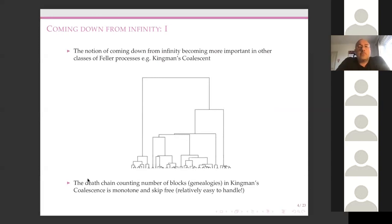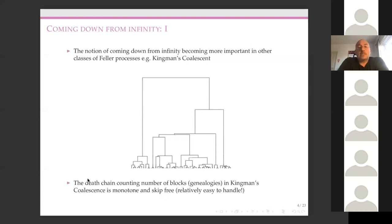Here's another classic example: Kingman's coalescent. This is a model for merging blocks, or equivalently for genealogical evolution backwards in time. Blocks merge at a constant rate: any two blocks merge at a constant rate, so if you have n blocks they merge at rate n-choose-2. You can think of the number of blocks as a Markov chain, a death chain. A natural question is: can I start with an infinite number of blocks? That's the question about coming down from infinity — a Markov chain entering at plus infinity, extending the state space to include the boundary point plus infinity.